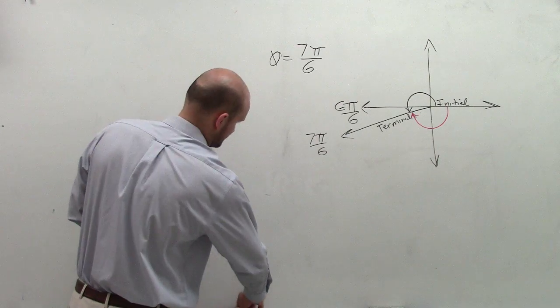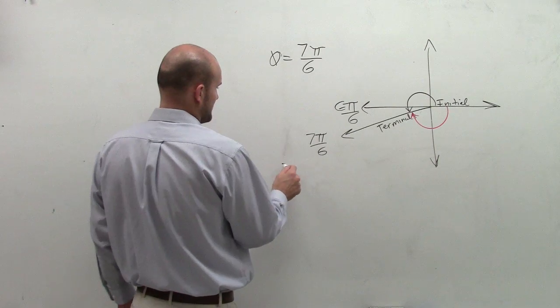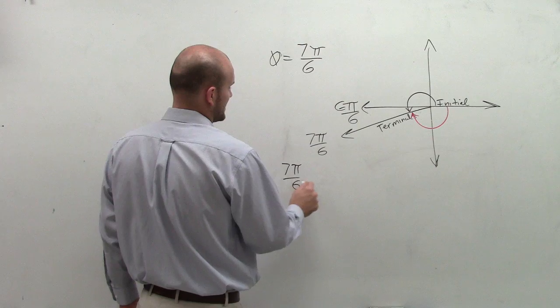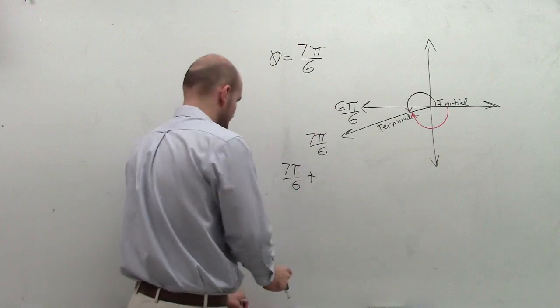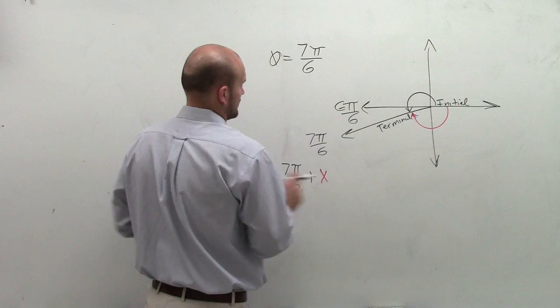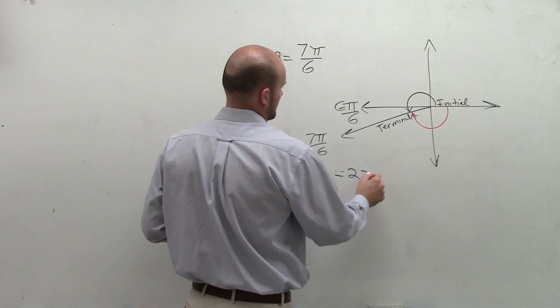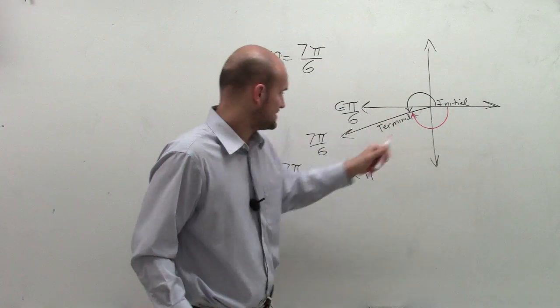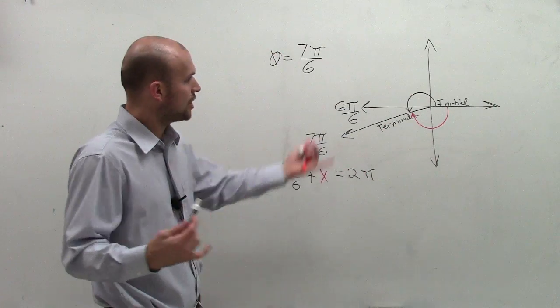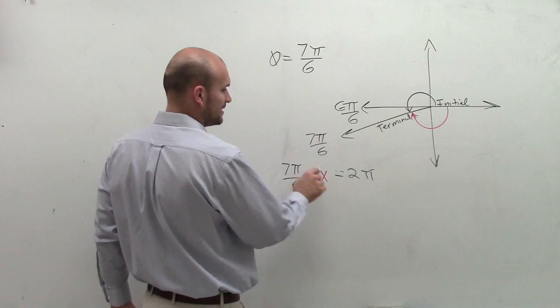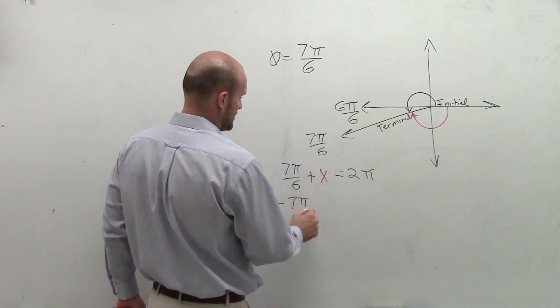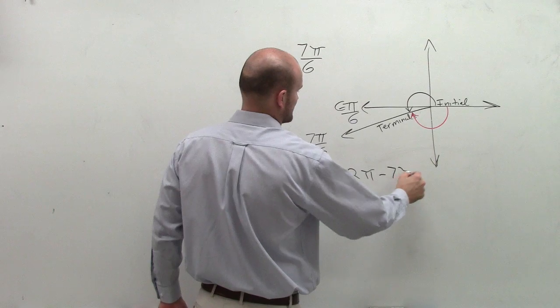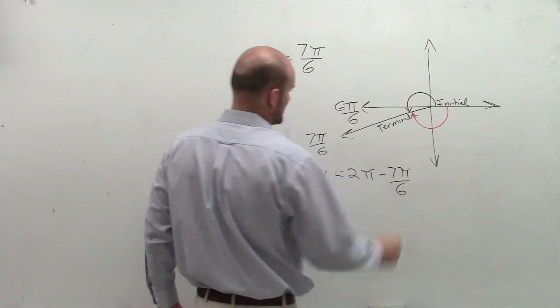So I could say 7π over 6, plus this little red angle, equals 2π. This angle plus this angle equals 2π. So how do you solve for that red angle? Well, let's solve for x. 7π over 6 minus 7π over 6.